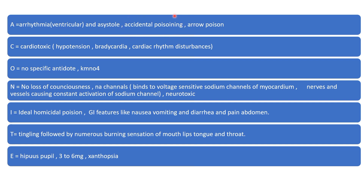The next important thing under 'A' is that aconite is a very common cause of accidental poisoning because its root resembles the horseradish root. Third point also important: it is an arrow poison. So 'A' stands for arrhythmia, accidental poisoning, and arrow poison.